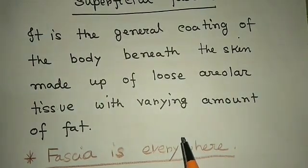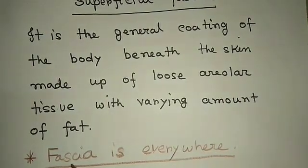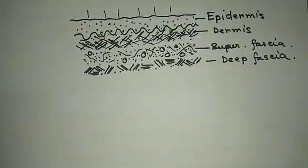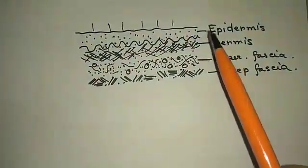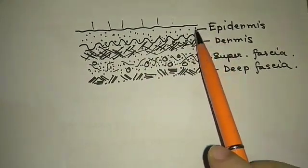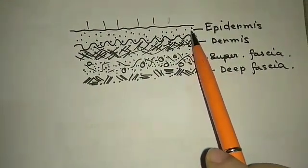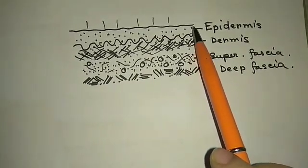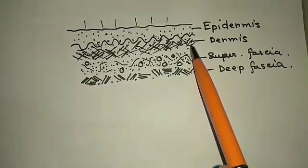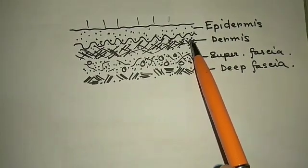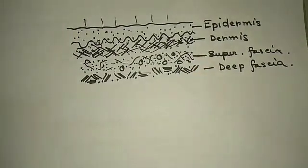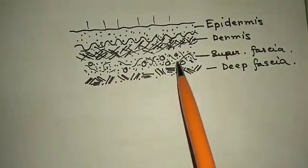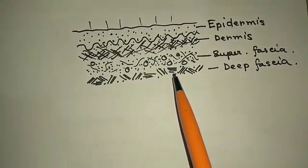This picture shows the epidermis - this is epithelial tissue, keratinized stratified squamous epithelium. Under this is the dermis, formed by dense irregular connective tissue. Under this is the superficial fascia, formed by loose connective tissue. And under this is deep fascia, also formed by dense irregular connective tissue.